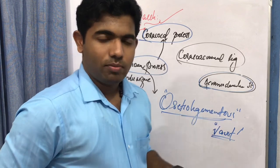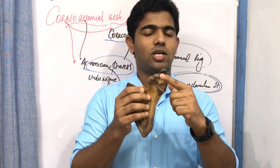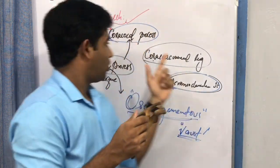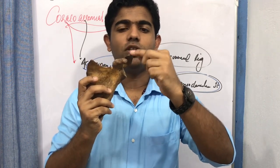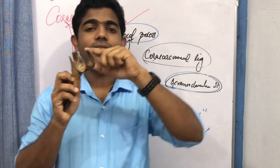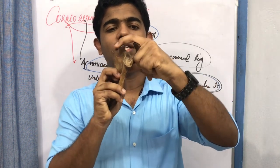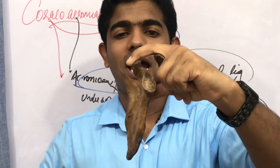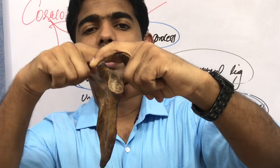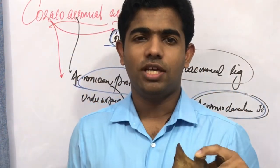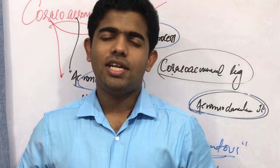Why do we need a coracoacromial arch and where is it located? The coracoid process is here, the acromion process is here, the coracoacromial ligament connects the coracoid process to the acromion process, and the acromioclavicular joint is here. Together these form the coracoacromial arch in this region.